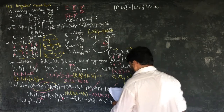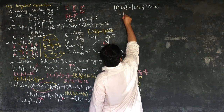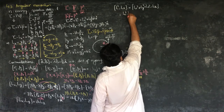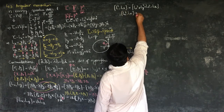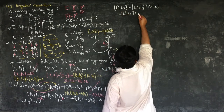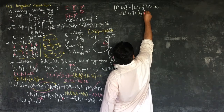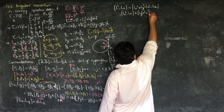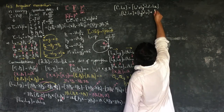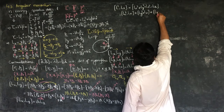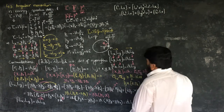We need to calculate this. First, take the commutator of Lx squared with Lx, then plus the commutator of Ly squared with Lx, and then the commutator of Lz squared with Lx.